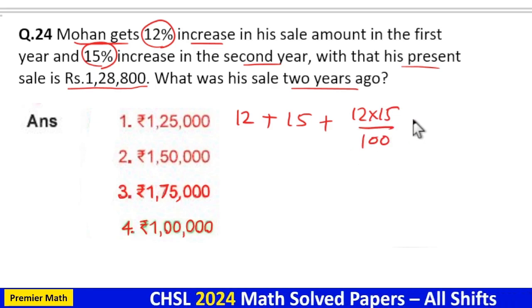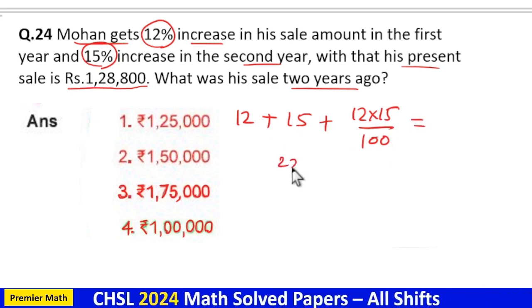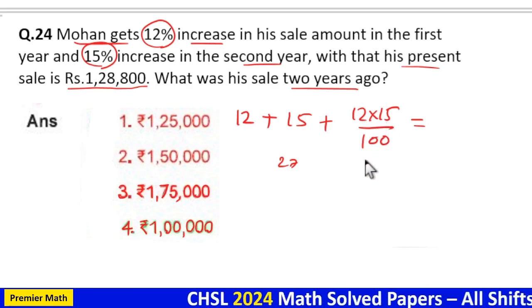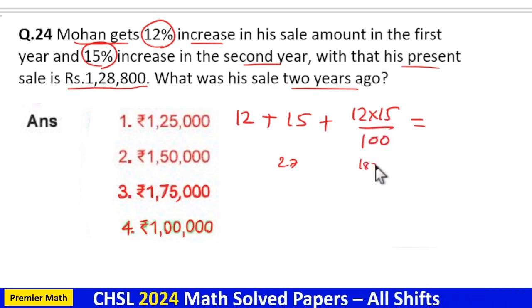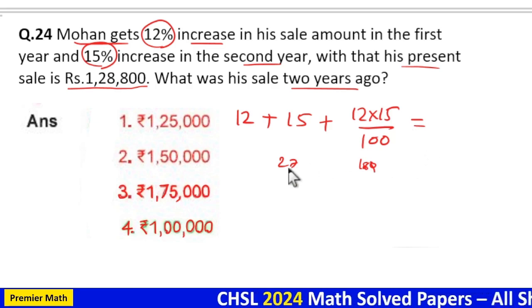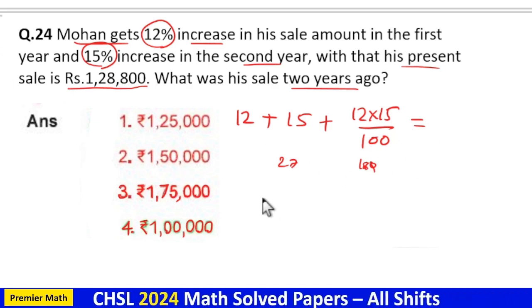Which is equal to 12 plus 15, that's 27. 12 into 15: 12 into 10 is 120, 12 into 5 is 60, 120 plus 60 is 180. 180 by 100 is 1.8. So 27 plus 1.8 is equal to 28.8 percentage.